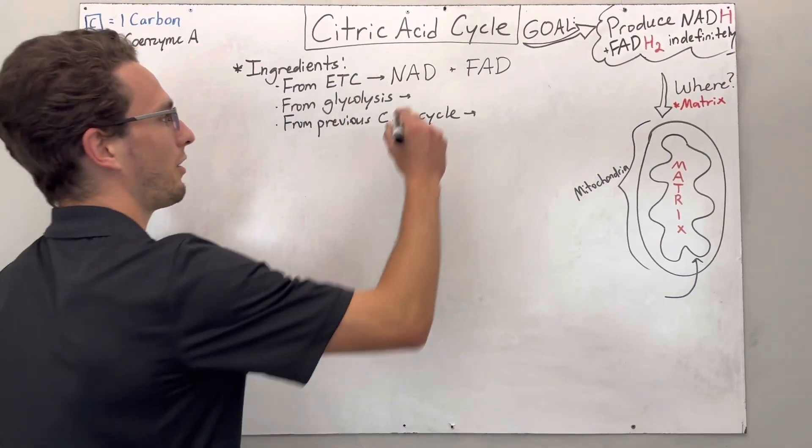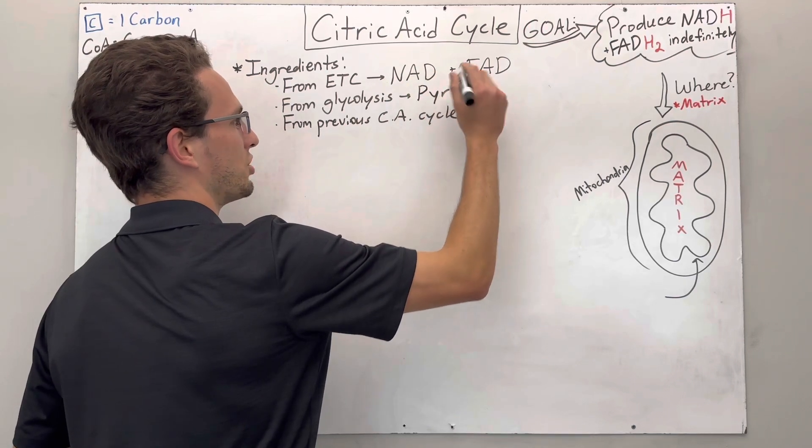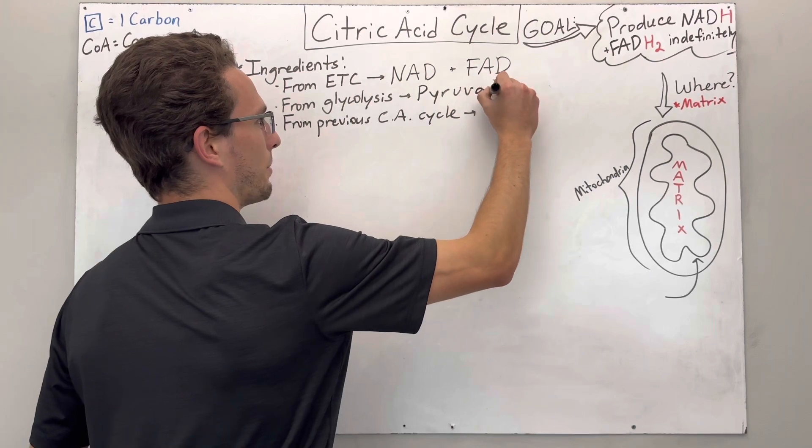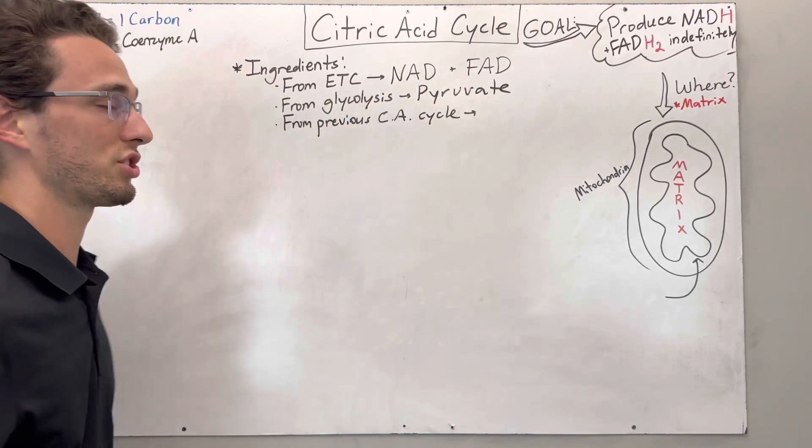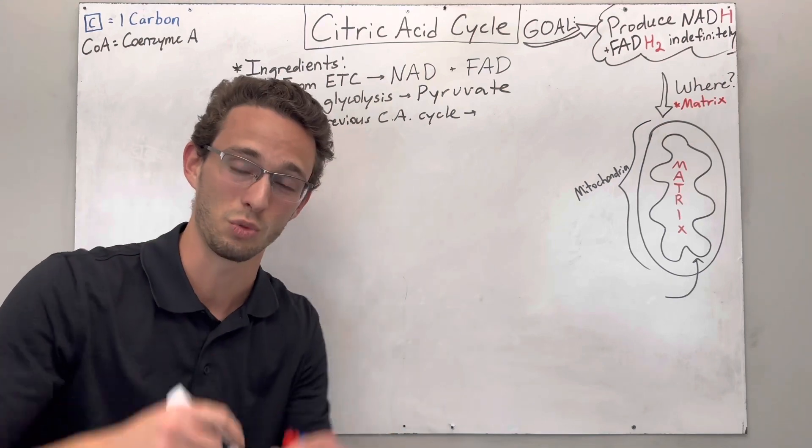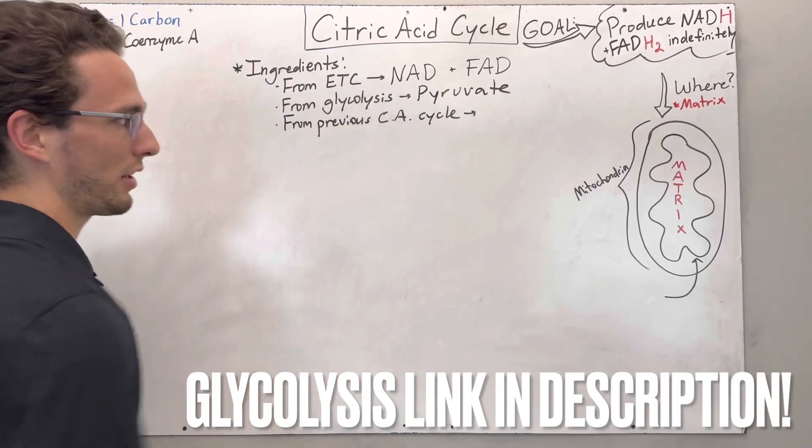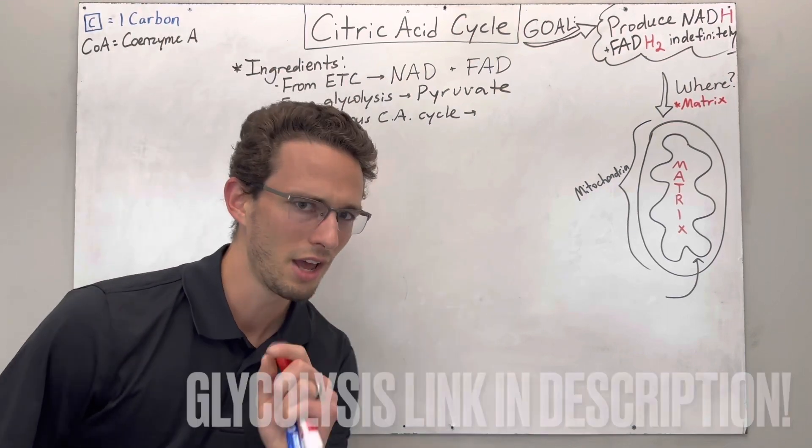But we also have a couple other ingredients that we will have. We will have a molecule called pyruvate, specifically two of them. But I'm going to just do one pyruvate for this example. And this is a product of what's called glycolysis, which will be the next video you watch after this one, where we're literally breaking glucose apart and we are generating these molecules called pyruvate.